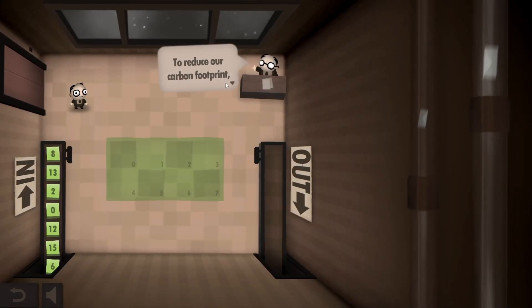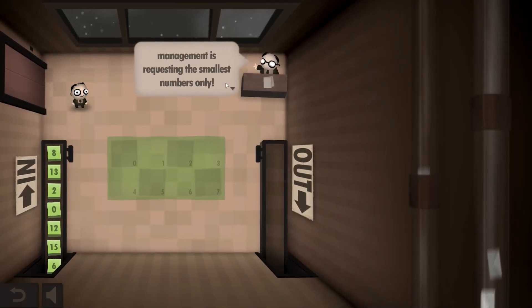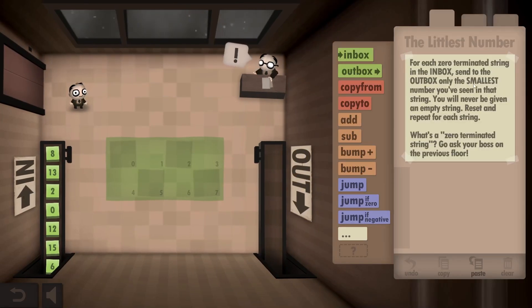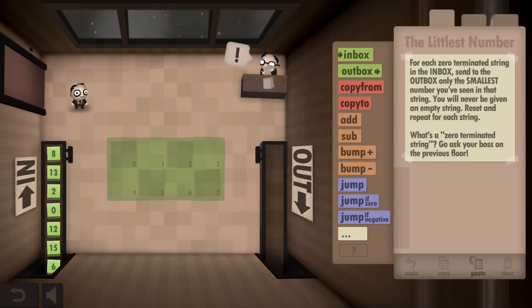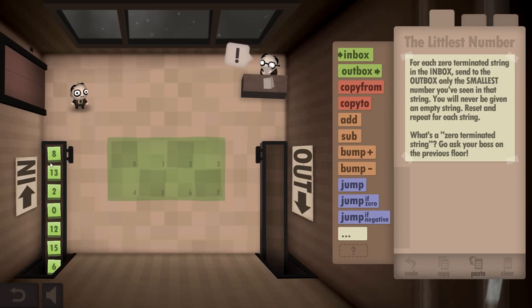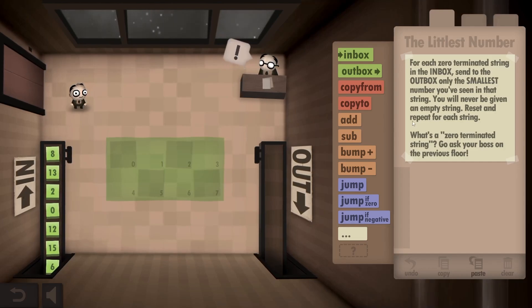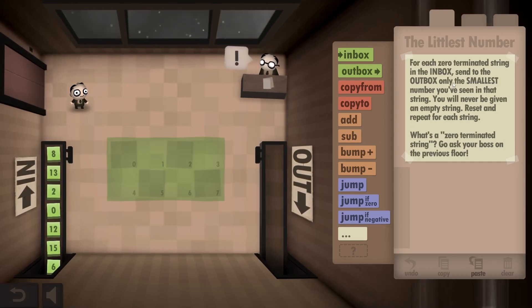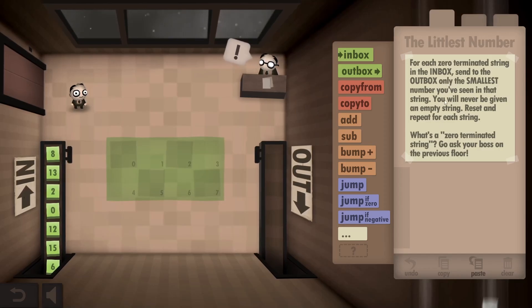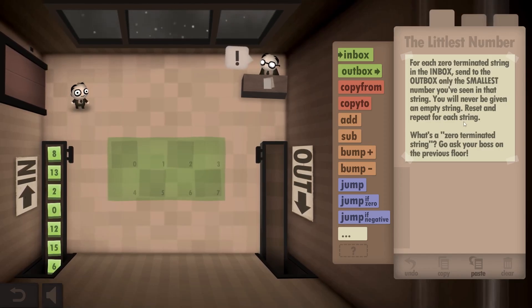We need to reduce our carbon footprint. We just need the smallest numbers. Okay, so we've got zero terminated strings. We've done that last time, so basically there's a string of numbers and it terminates by zero. So in this case we've got 8, 13, and 2, and we just need to send the smallest number to the outbox, and we will never be given an empty string. Okay, cool.